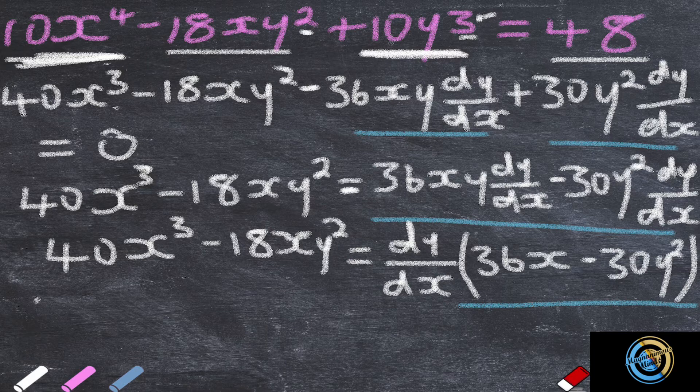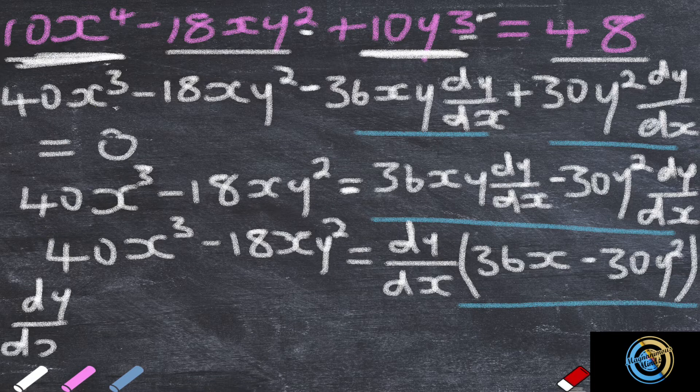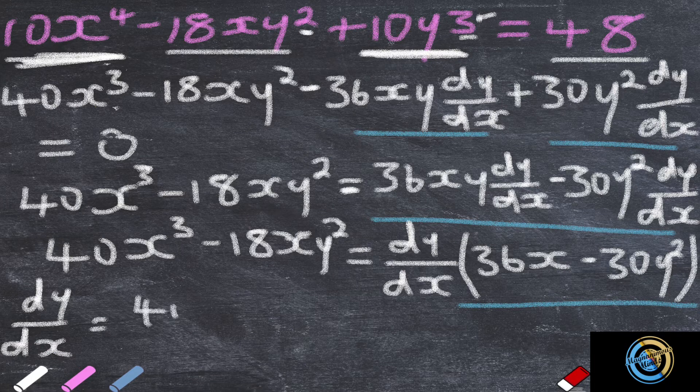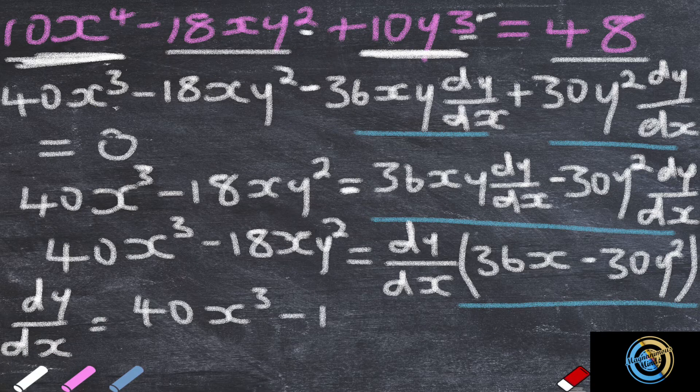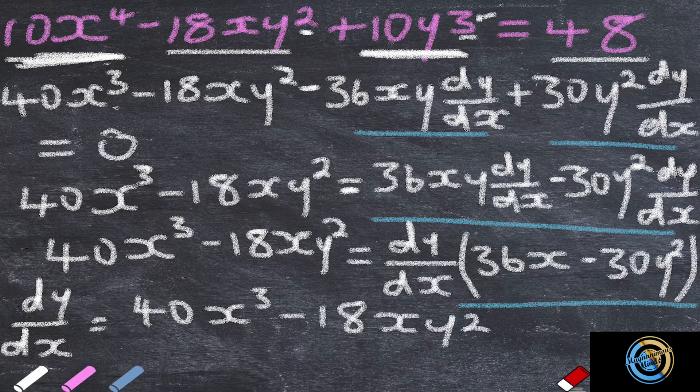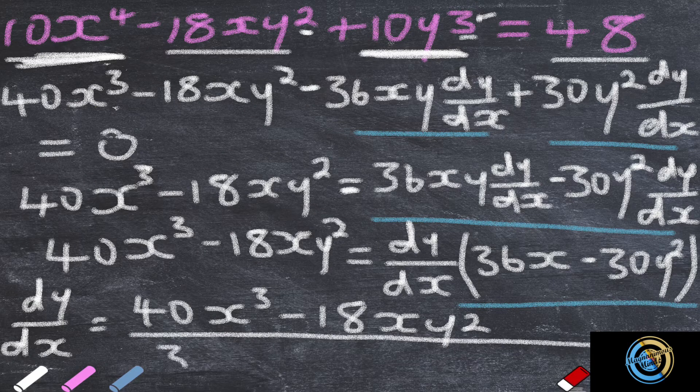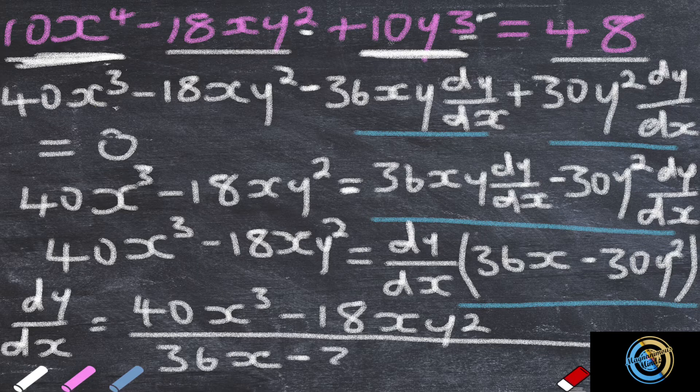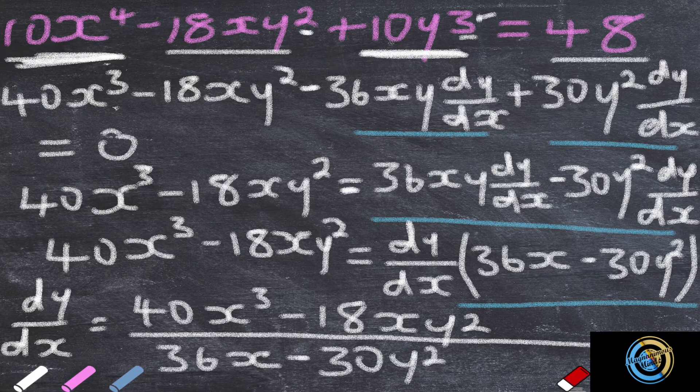So our dy over dx is going to be 40x cubed minus 18xy squared, all over 36x minus 30y squared. Then this right here is our answer.